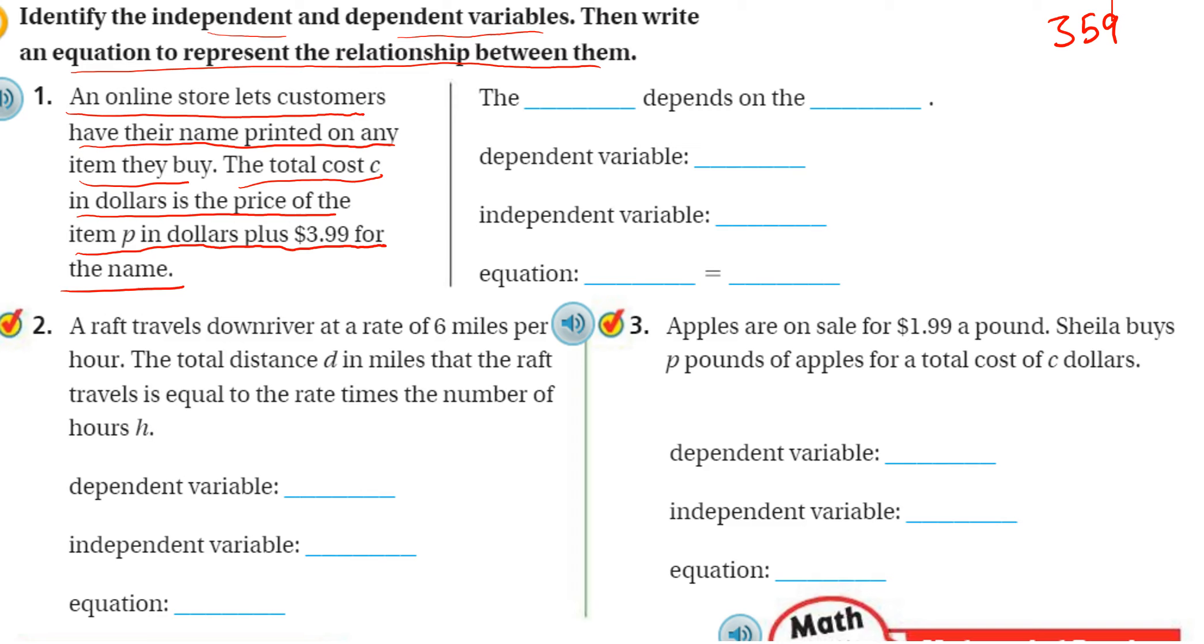Me, personally, creating the equation is easier for me to do first, and then I can easily see what the independent and dependent variables are. That may not be the case for you, okay? But solve it how it's easiest for you.